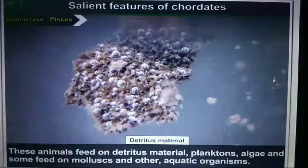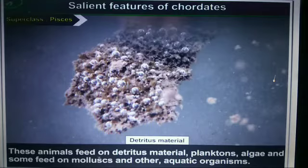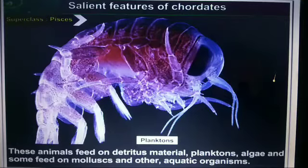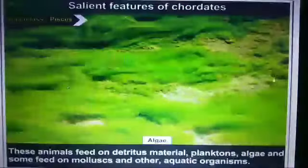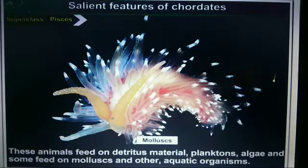These animals feed on detritus material. Detritus material includes planktons and algae. Some also feed on molluscs and other aquatic organisms. So depending on the fish, they may feed on plankton, algae, molluscs, or other aquatic organisms.